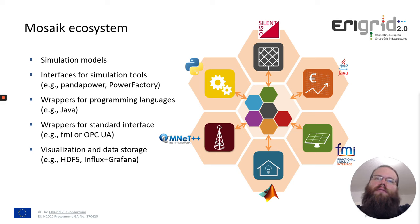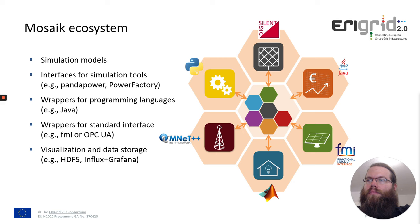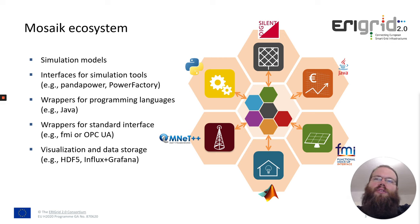The Mosaic core itself isn't so interesting when you want to do a simulation because you don't really have integrated models. What we call the Mosaic ecosystem is the interesting part for doing simulations. There are some simulation models available or that can be easily added to Mosaic. There are interfaces for simulation tools like Panda Power or Power Factory for power grid calculations. There are wrappers for programming languages like Java, C-Sharp, or Matlab so that new simulation models can be easily integrated. We also have wrappers for standard interfaces like FMI or OPC UA, and some visualization and data storage options like HDF5 file-based storage or InfluxDB, which can be used for visualization together with Grafana.